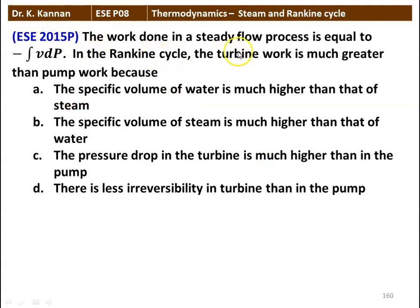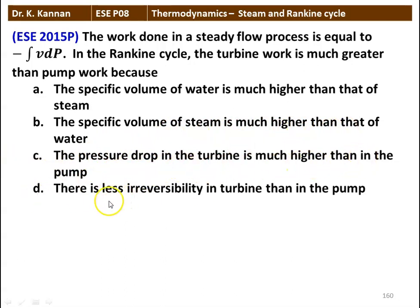Next question: the work done in a steady flow process is equal to minus integral VdP. In the Rankine cycle, the turbine work is much greater than the pump work because: A: the specific volume of water is much higher than that of steam, B: the specific volume of steam is much higher than that of water, C: the pressure drop in the turbine is much higher than in the pump, D: there is less irreversibility in a turbine than the pump. The correct answer is: the specific volume of steam is much higher than that of water. That is why the integral VdP turbine work is much greater than pump work in a Rankine cycle.